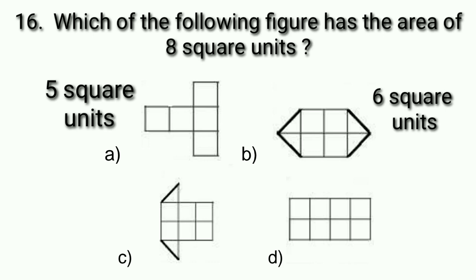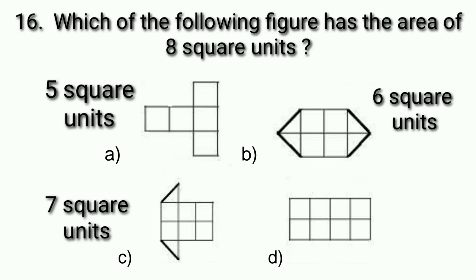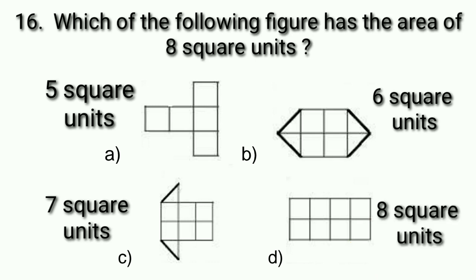In figure C, counting: 1, 2, 3, 4, 5, 6 full square boxes, and 2 half square boxes, which equals 1 full square. So 6 plus 1 gives 7 square units. In option D, counting: 1, 2, 3, 4, 5, 6, 7, 8 — its area is 8 square units, which is correct according to the question. So we will put a tick at option D.